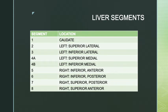As we talked about previously, our liver is divided up into segments. We have our left lobe, which is divided into lateral and medial, and then we have our right lobe, which is divided into anterior and posterior. And then we have segment one, which is the caudate lobe.